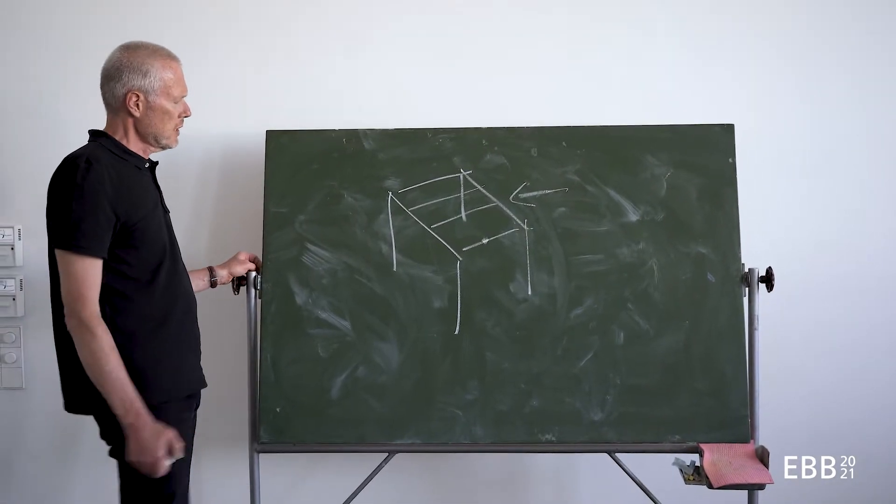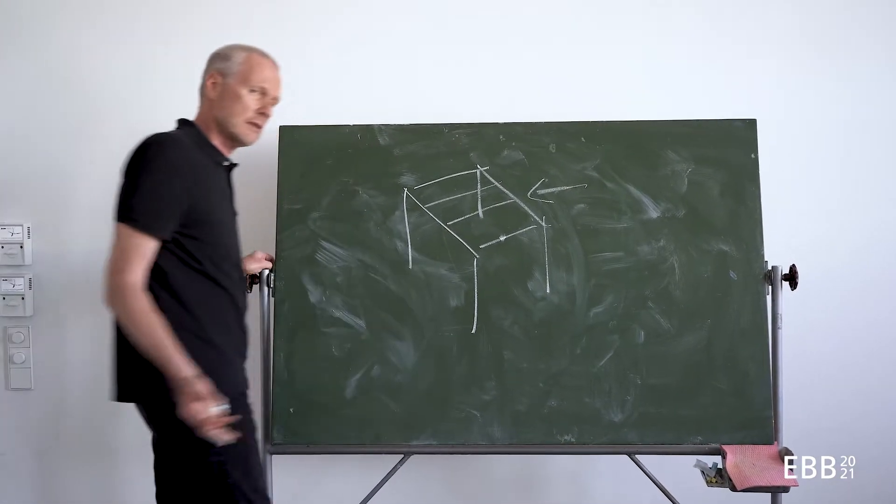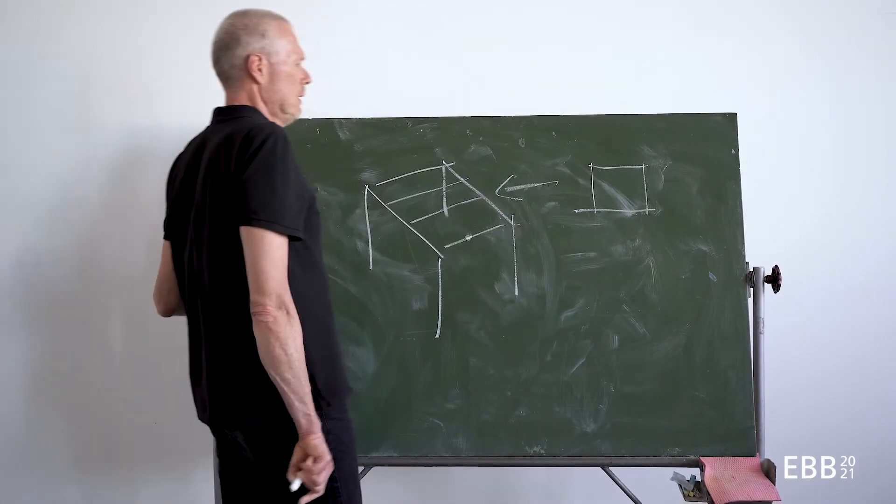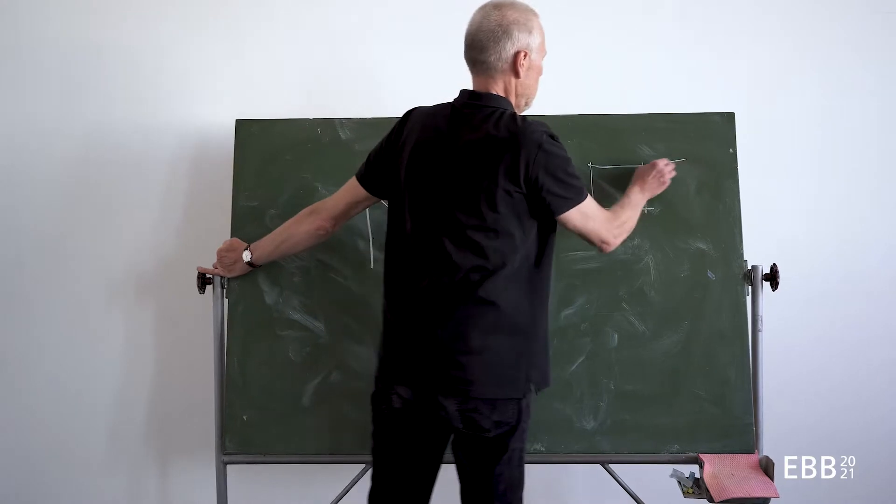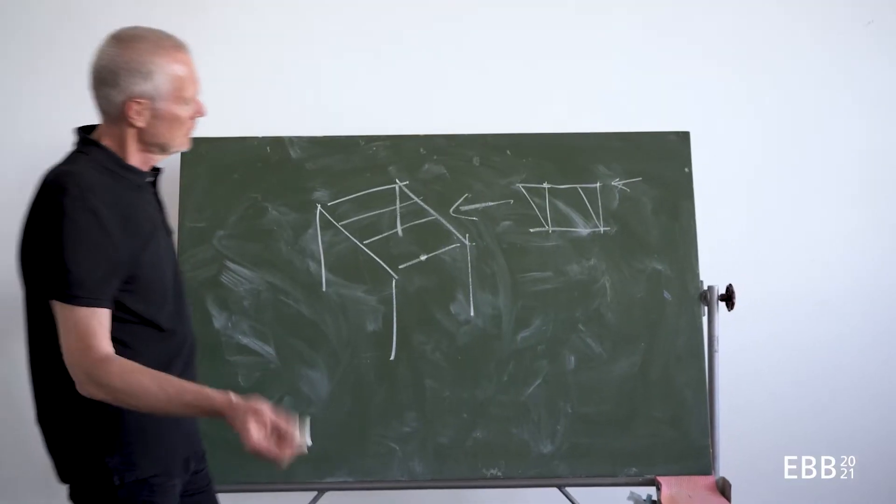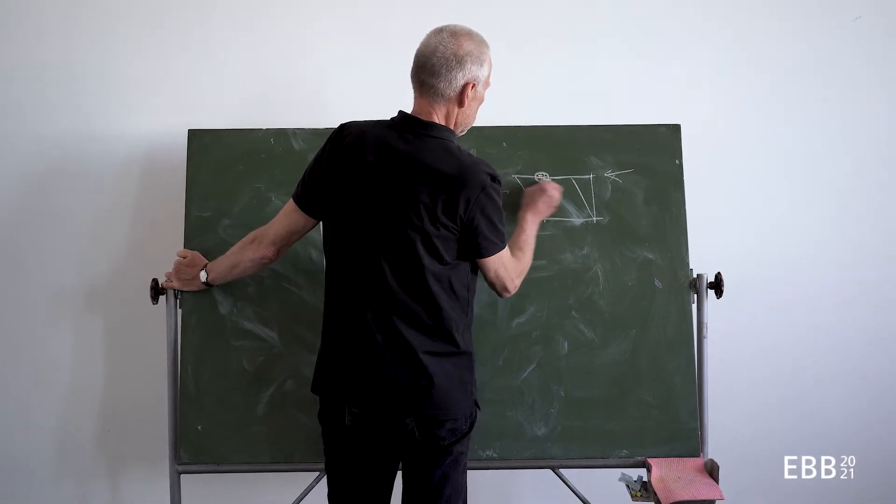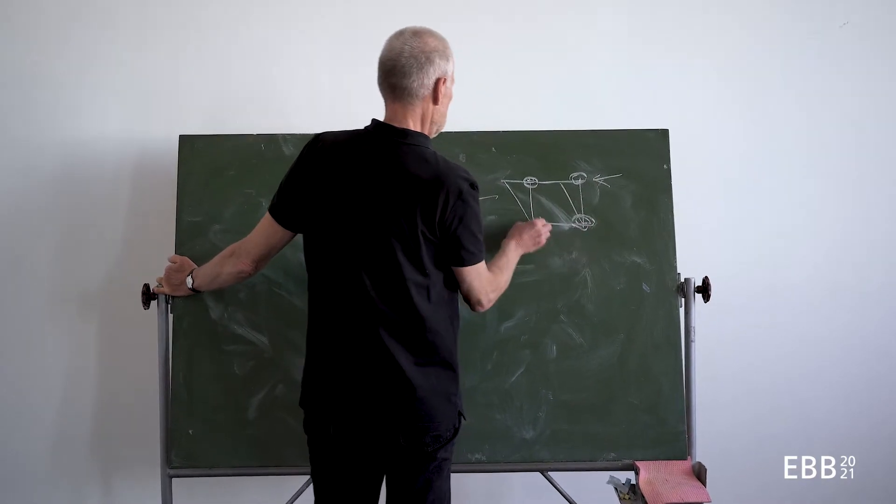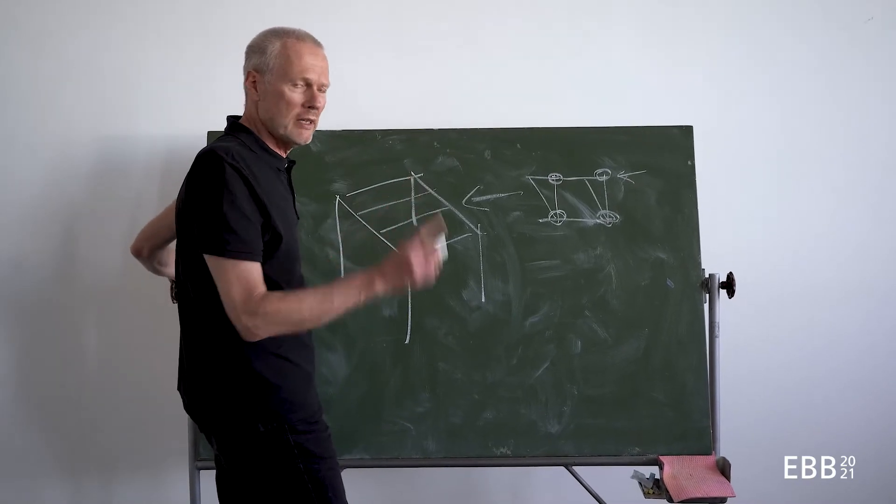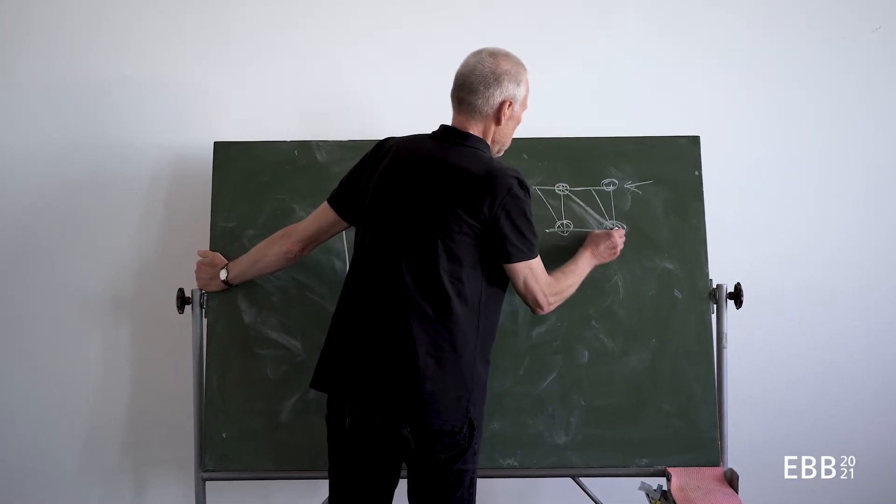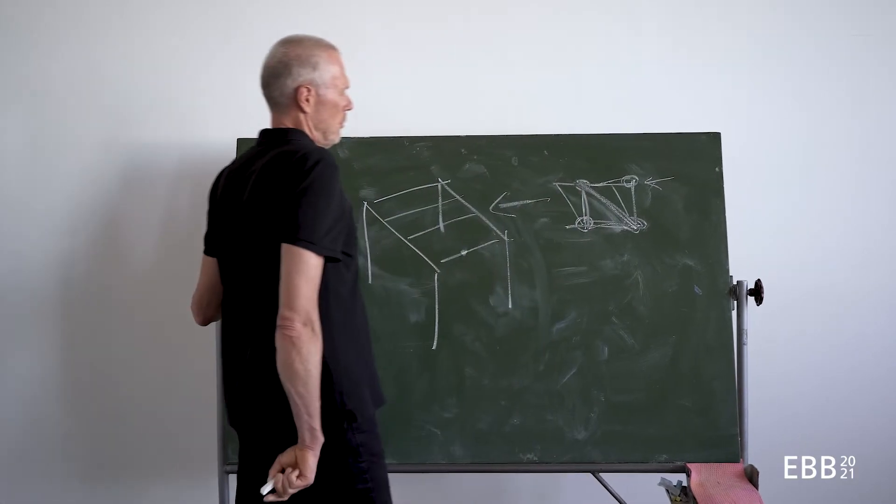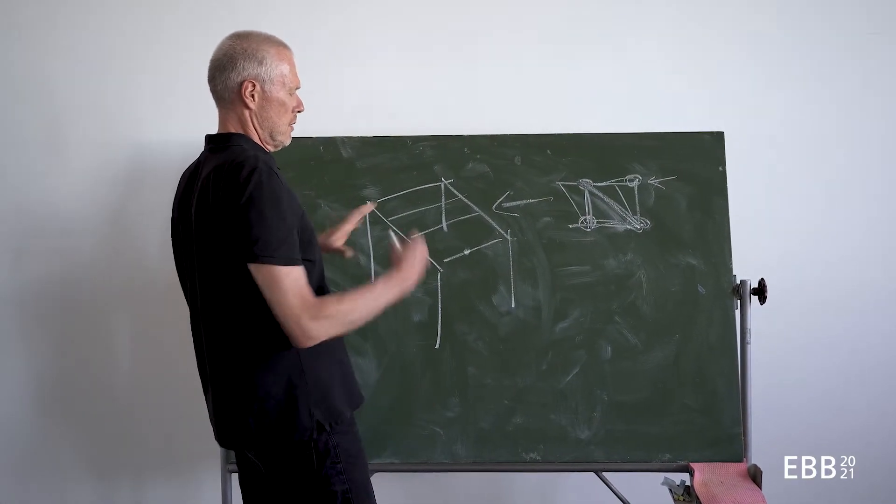This bracing could be done by diagonals, because if I have a rectangle and I have a horizontal load, I can deform it into a parallelogram. So if I want to change this I have to make out of four articulations only three in one relevant system. This could be done with a diagonal. Three points are stable, four points are not because I can deform this.